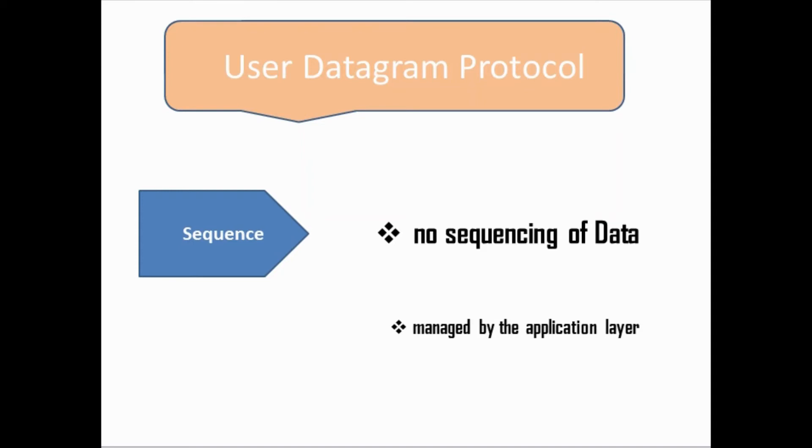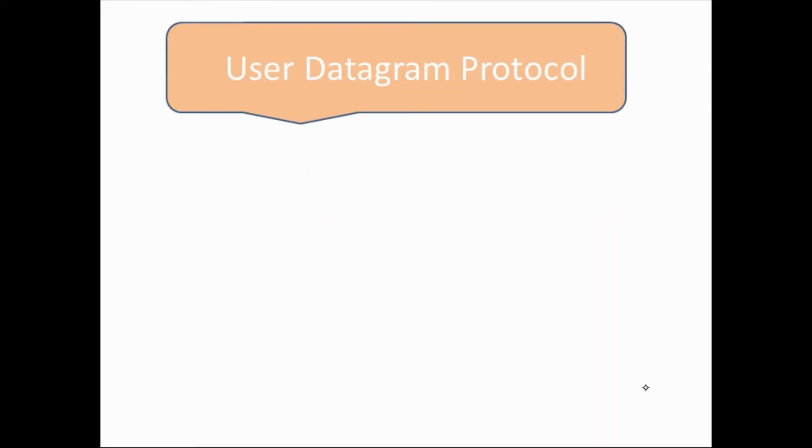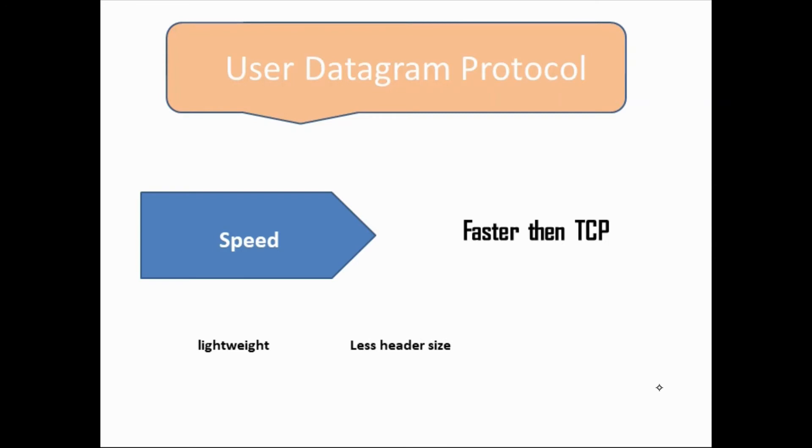After sequence, we have speed. UDP is faster than TCP because it is lightweight. It has a less header size, and it does not care about data delivery. That's why UDP is faster than TCP.